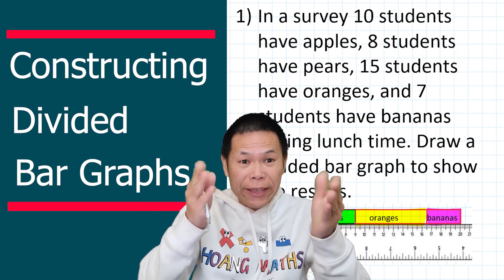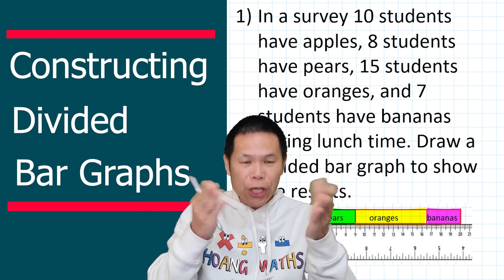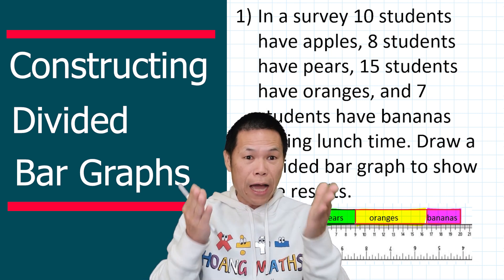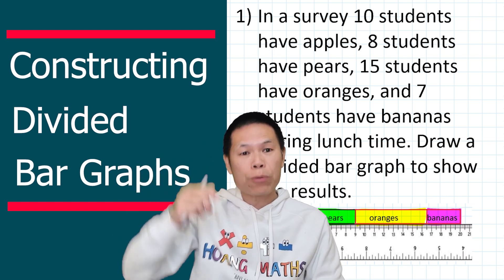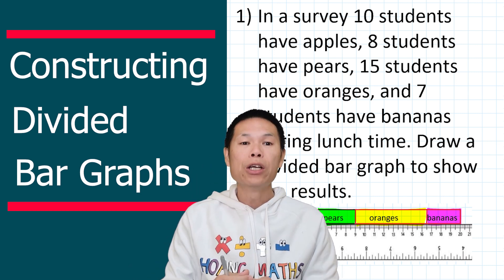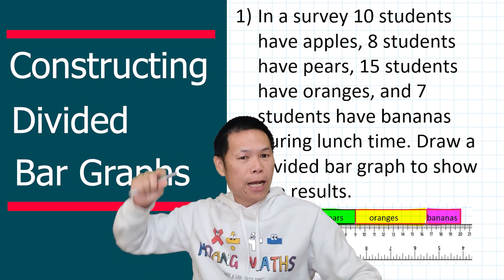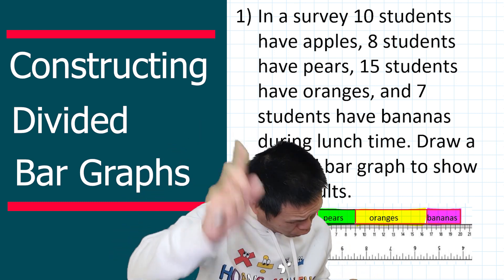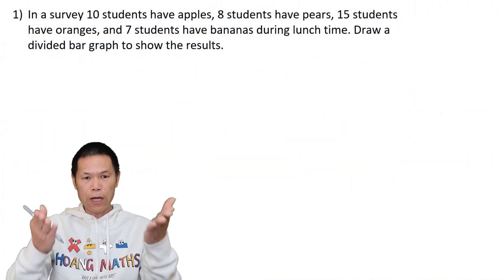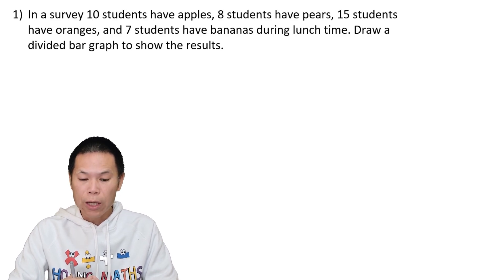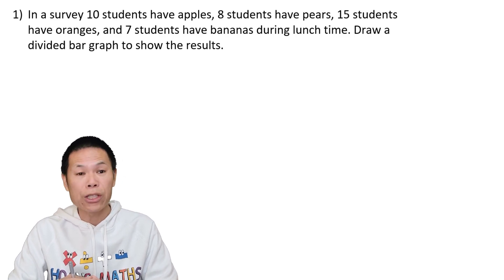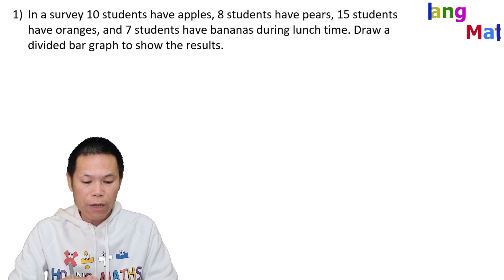Hi there, hope you have a fantastic day. Today I will teach you how to draw divided bar graphs. There is a PDF version in the description below for you to download so you can work with me. First problem: in a survey, 10 students have apples, 8 students have pears, 15 students have oranges, and 7 students have bananas during lunchtime. Draw a divided bar graph to show the results.